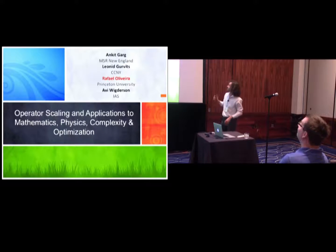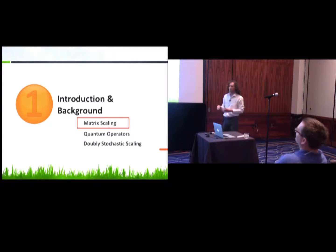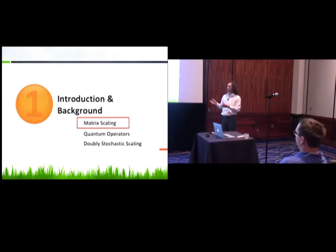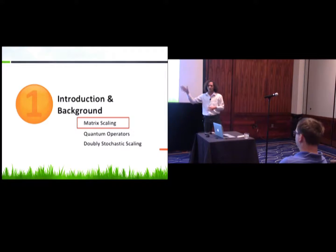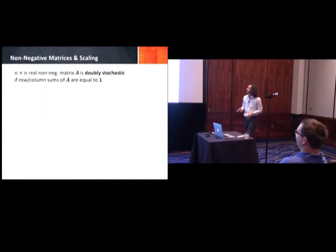I hope there are no physicists here — I don't understand much of that, but okay. I'll begin with an introduction and background. In the first part of the talk I'll cover matrix scaling, then generalize to quantum operators and operator scaling, and then discuss doubly stochastic scaling in the matrix case. There's a second part I hope to get to, because apparently once we talk about quantum operators, we never finish within the time limit.